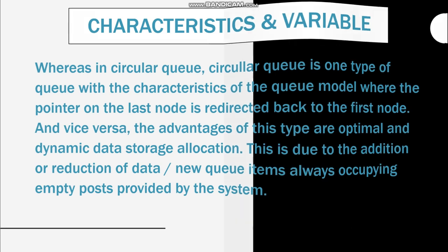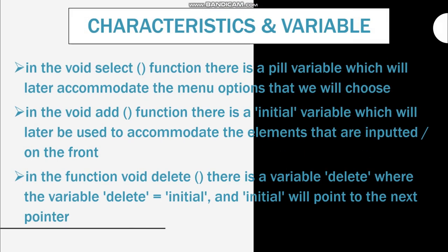In the void select function, there is a choice variable which will accommodate the many options that we will choose. In the void add function, there is an initial variable which will accommodate the elements that are included or entered. In the void delete function, there is a variable delete where delete equals initial, and initial will point to the next pointer.